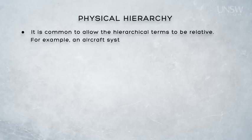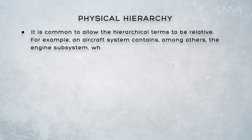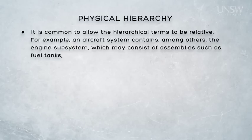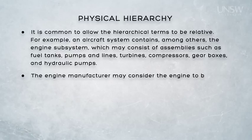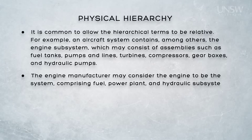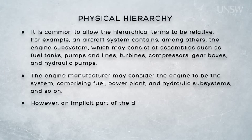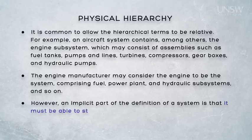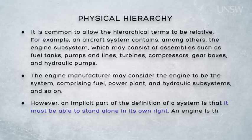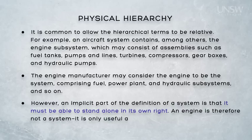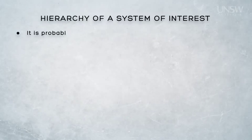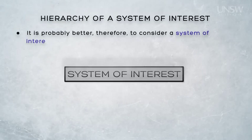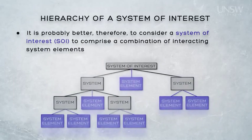For example, if we take the highest level of an aircraft system, we could consider that an aircraft contains, amongst other things, an engine subsystem, and that that would comprise assemblies such as fuel tanks, pumps and lines, turbines, compressors, gearbox and hydraulic pumps. From the viewpoint of an engine manufacturer, however, the engine could be considered to be a system comprising fuel, power plant, and hydraulic subsystems. But an implicit part of the definition of a system is that it has to be able to stand on its own — by that definition, an engine is only useful as an element of a system, that is, as a subsystem. It's probably better, therefore, to consider a system of interest to comprise a combination of interacting system elements, some of which may be systems in their own right. When the system of interest consists only of system elements that are systems in their own right, the system of interest is called a system of systems.